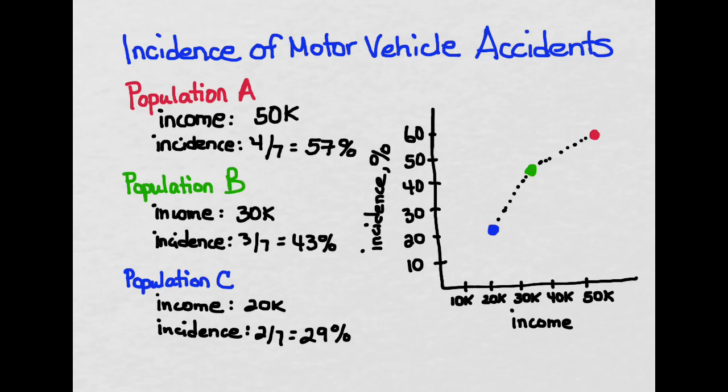Here on the right I'm showing you a graph of the relationship. On the x-axis here we have incidence of car accidents, and on the y-axis... I'm sorry, the y-axis is incidence and the x-axis is income.